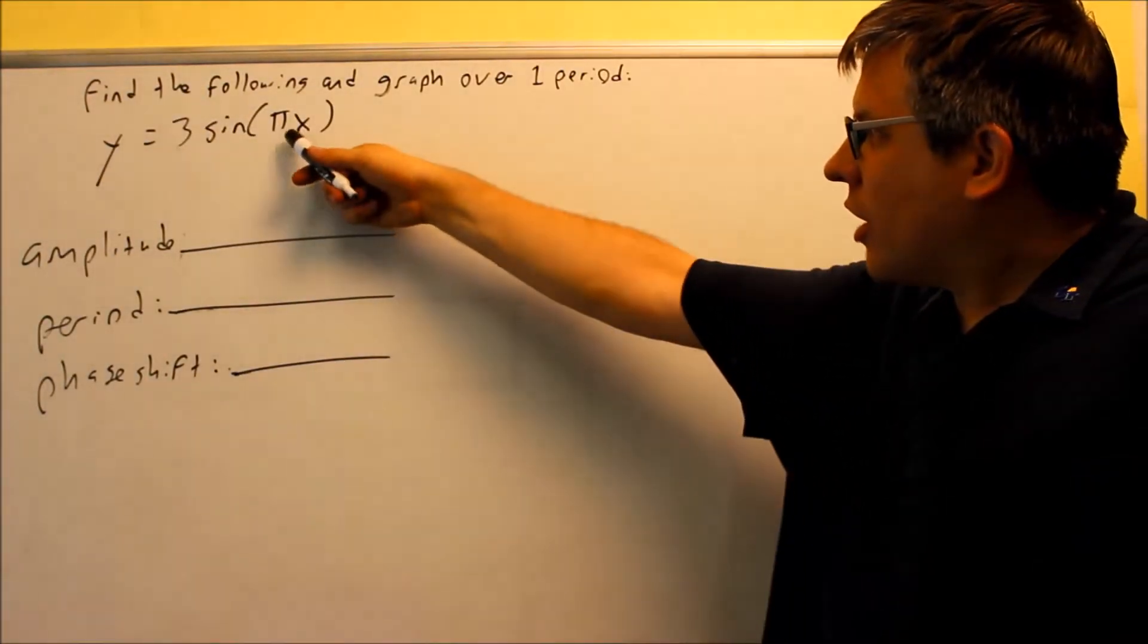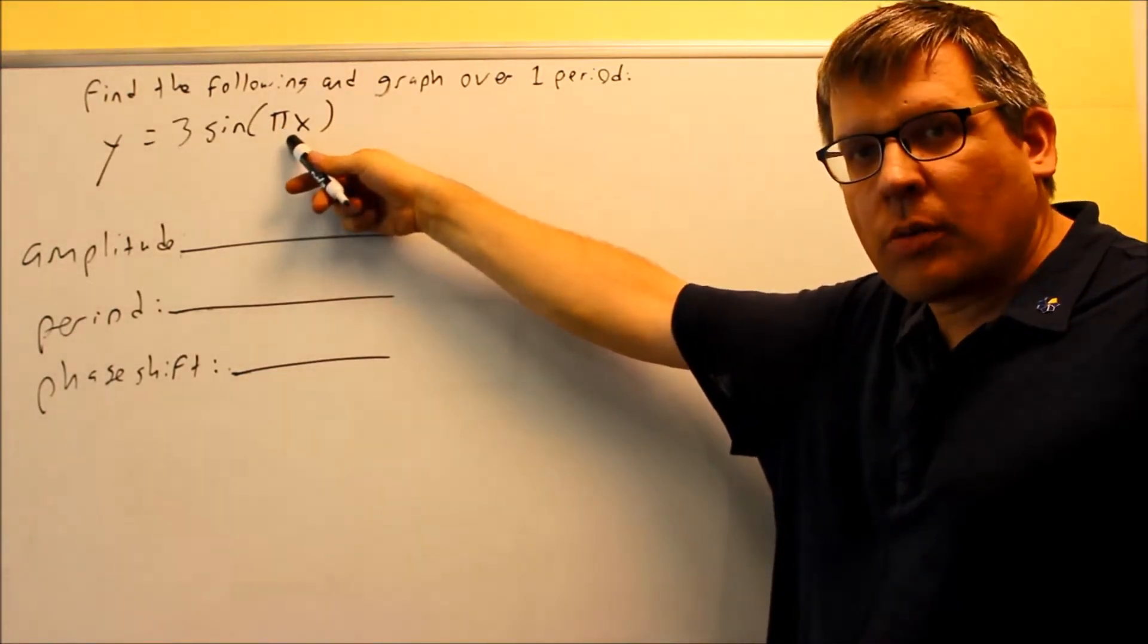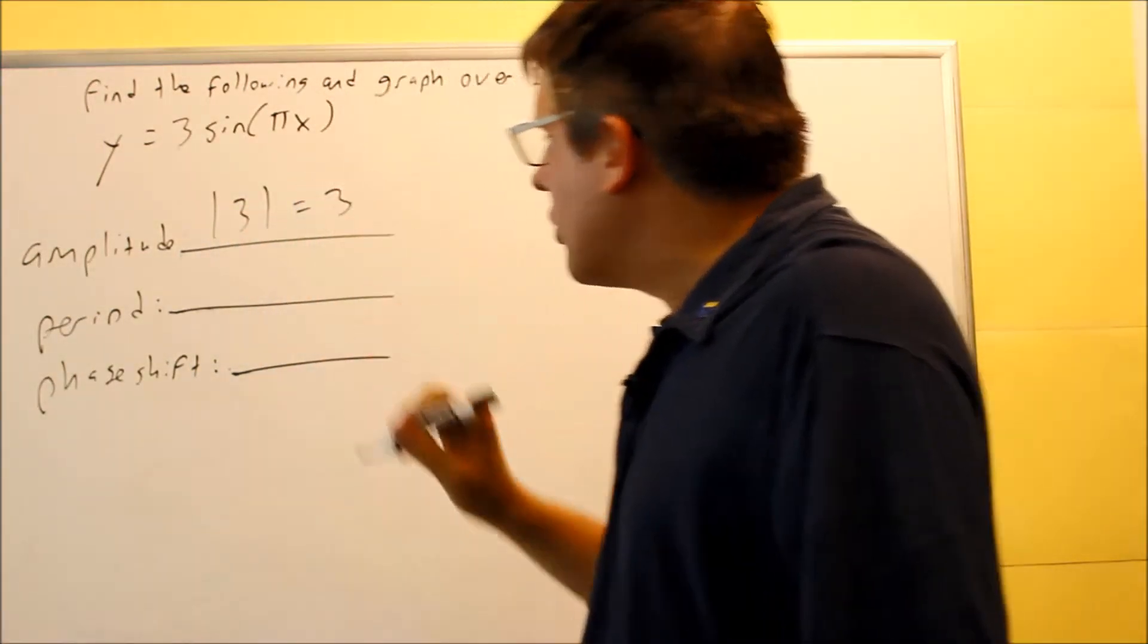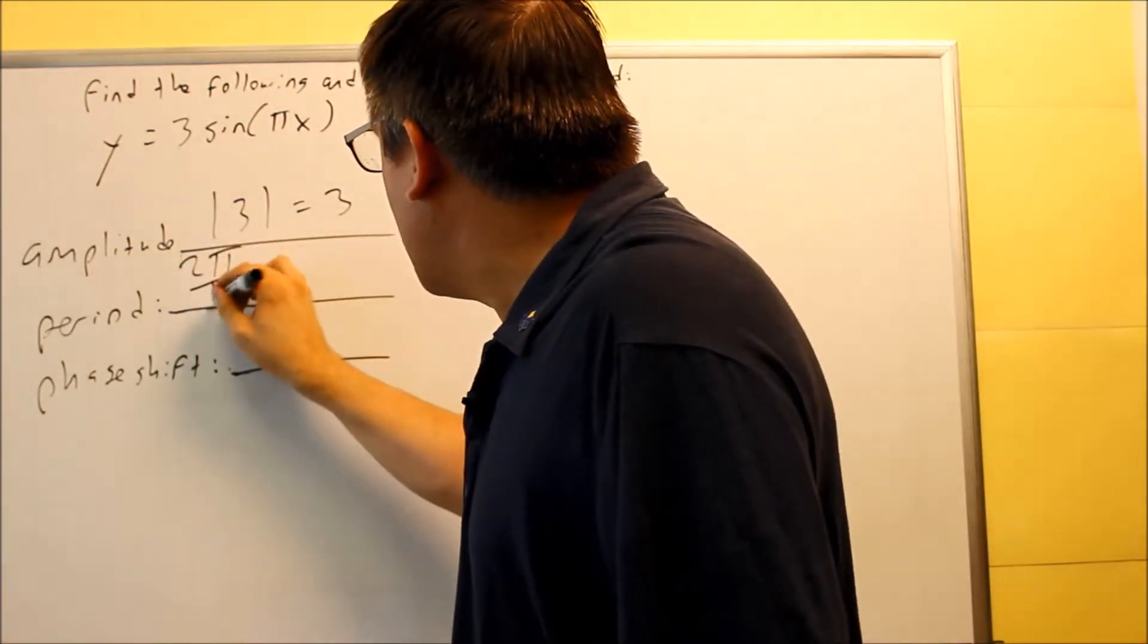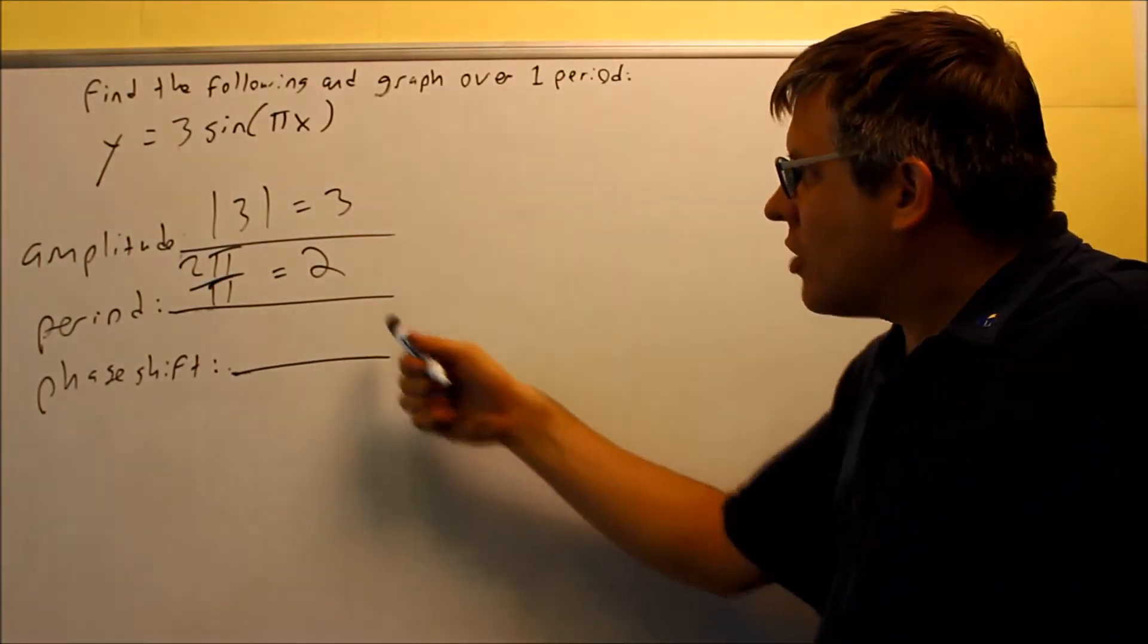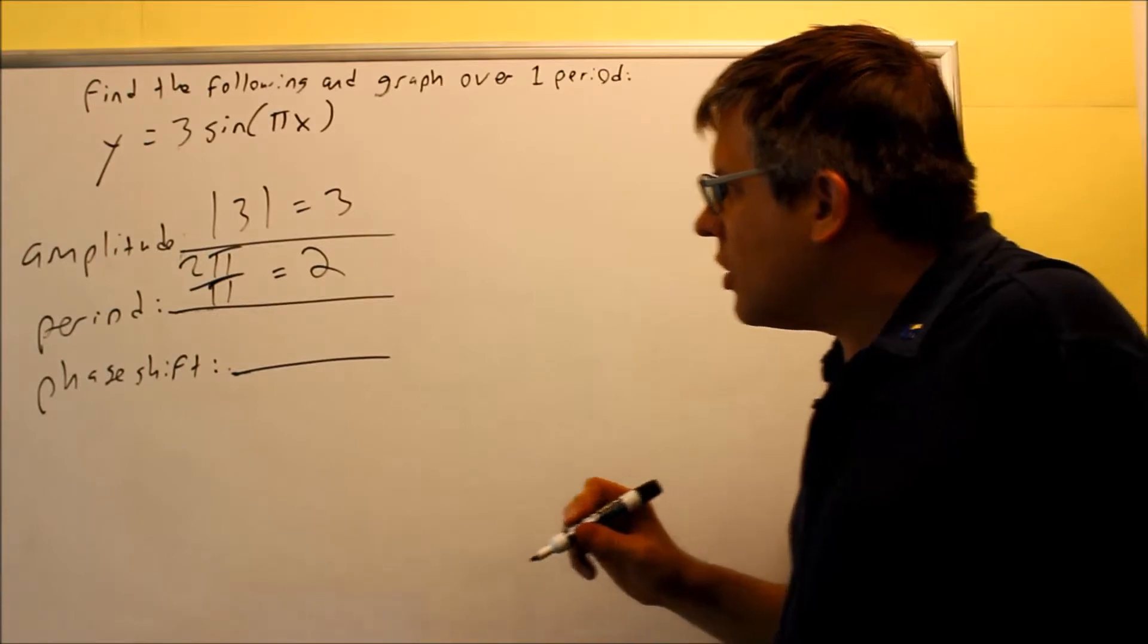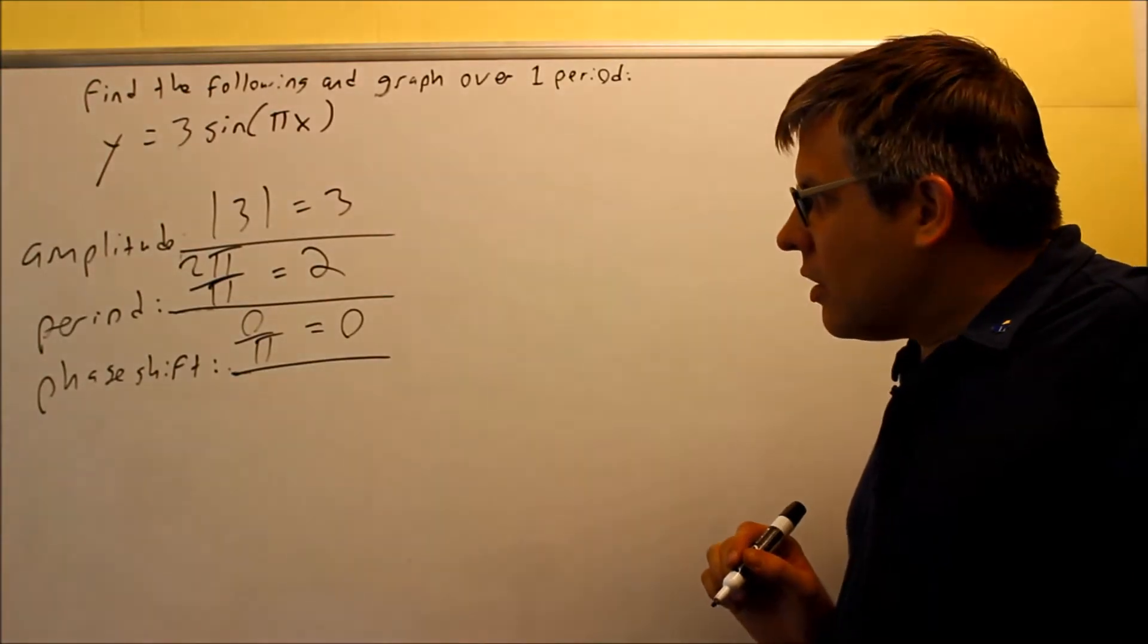For this one, we notice there's a number that is not a 1 in front of the x. So if you have a number that's not a 1, we know that the period is not going to be our normal 2π. So I've got to find out what my new period is going to be. But first, we'll find amplitude. Amplitude is the absolute value of 3, which is going to be 3. Now we're going to find the period. The period is going to be 2π divided by the number in front of the x, so 2π divided by π is going to be 2. Your phase shift here is still going to be 0, because there's no number that comes after the x. So I know that my phase shift is going to be 0. So 0 divided by π, 0 divided by anything is going to be 0.